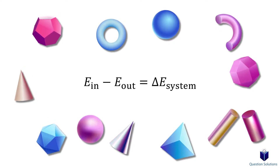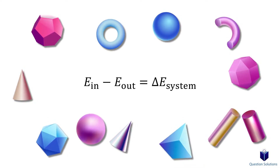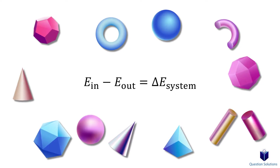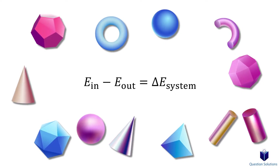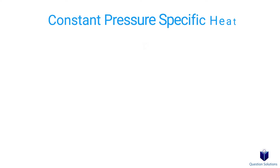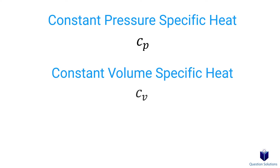Most of the time, we can assume solids and liquids to act as incompressible substances to solve problems. Now remember we talked about constant pressure and constant volume specific heats? When it comes to solids and liquids, both Cp and Cv can be taken to be identical, so we can represent it with just the letter C.